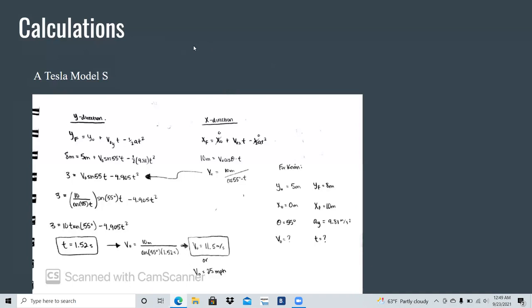So in the y direction, I started with the second kinematic equation. I plugged in my values and then I saw that after the third line, 3 equals v initial sine 55 t minus 4.9 t squared. We have two unknown values, so we moved on to the x direction. We know that the x initial and the acceleration is zero. So we just rearranged the equation to have only one unknown variable. So using v initial, we substituted it back to the y direction.